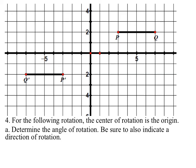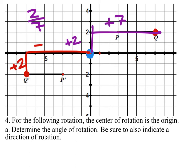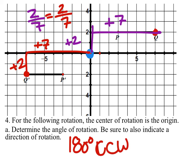For the following rotation, the center of rotation is the origin. Let's look at Q prime and Q. From the center of rotation to Q, we go up two and then to the right seven — slope of two-sevenths. From Q prime to the center of rotation, we also go up two and to the right seven — same slope. Since the slopes are the same, this must be a 180-degree rotation. Direction doesn't matter — 180 degrees is 180 degrees. Connecting the two points with a straight line confirms it goes through the origin.